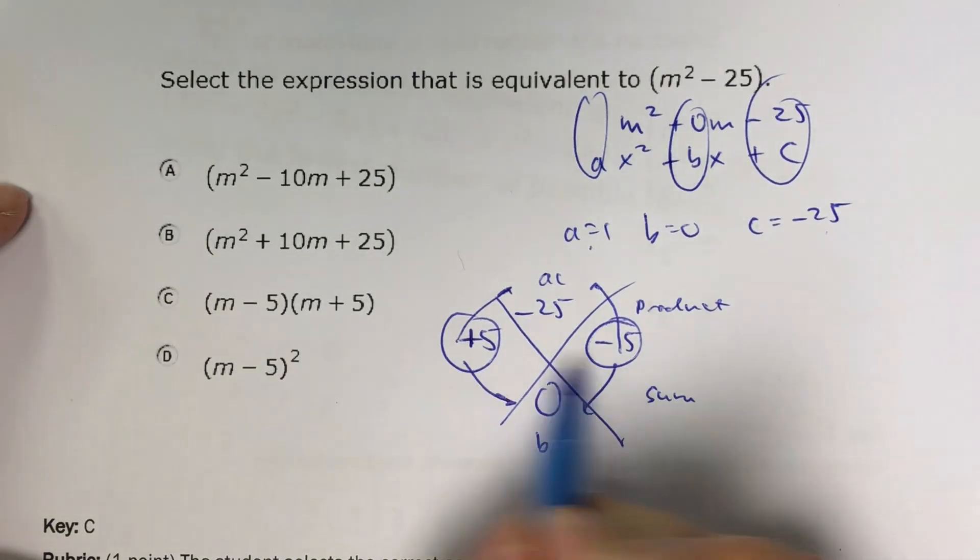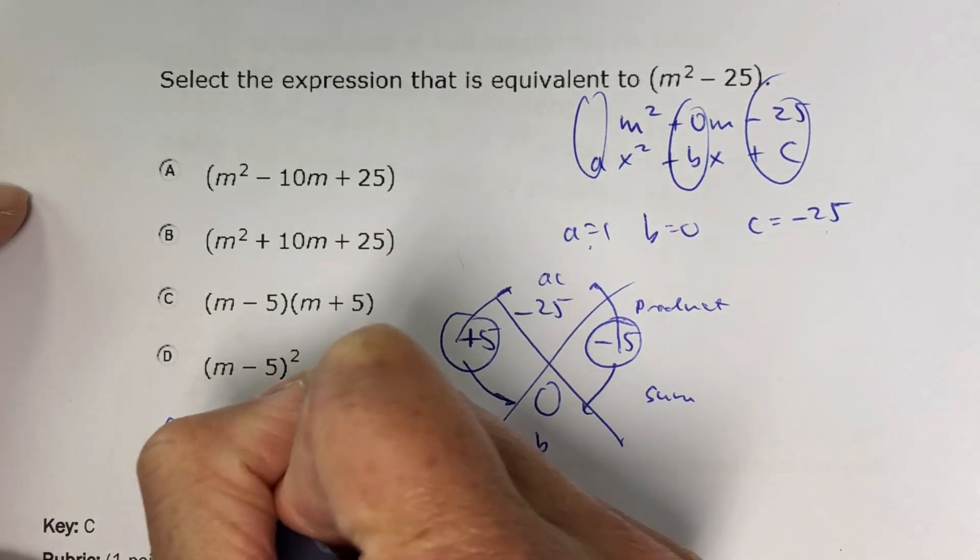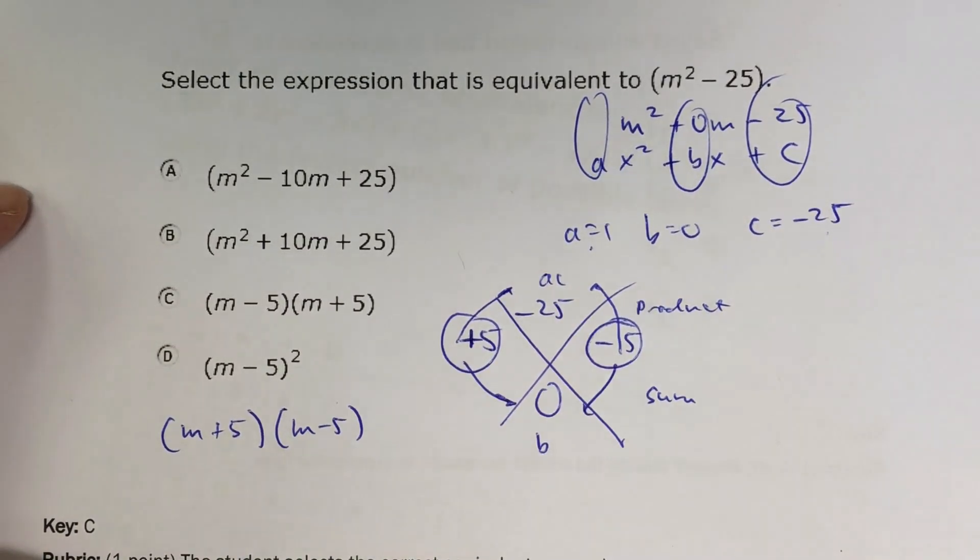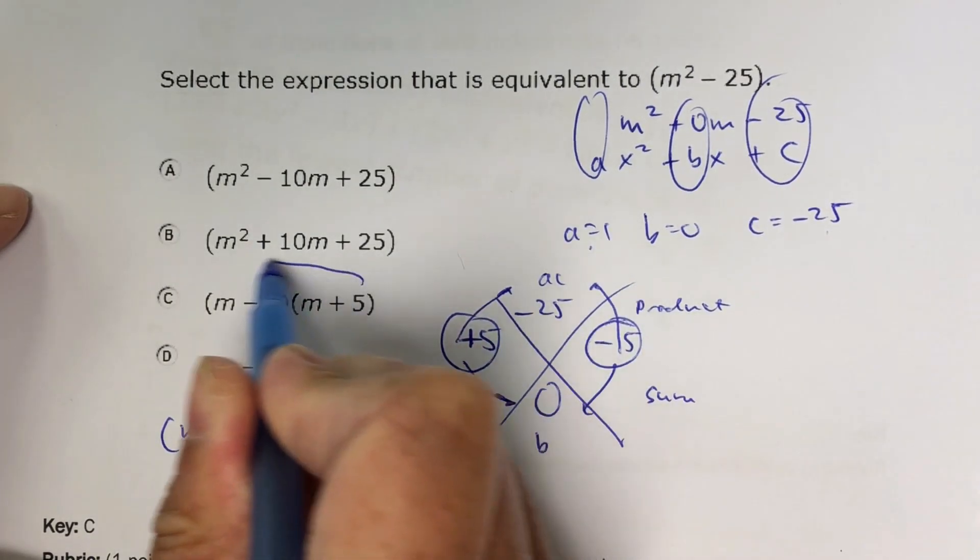If I take those two numbers and I put them into my m's here, m plus 5 and m minus 5. Remember the order doesn't matter here for multiplication, so your answer is going to be C.